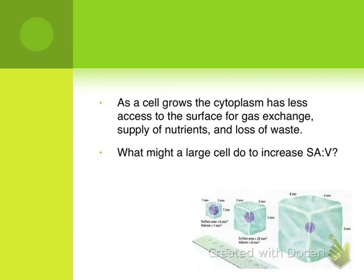As cells grow, the volume increases at a greater rate than the surface area. Volume is the area being supplied — it's the inside of the cell — while surface area is the access point for all of these supplies. The fact that surface area does not increase as quickly hinders the amount of nutrients that can enter and waste that can leave. This means there is a maximum size for a cell. Brainstorm what a cell might do to increase its surface area to volume ratio, and we'll discuss in class.